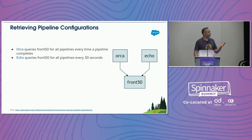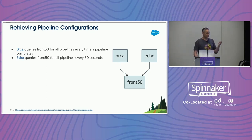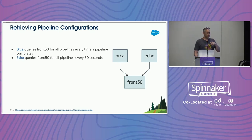Every time a pipeline completes, Orca was querying for all the pipelines. And every 30 seconds, every Echo pod was querying for all the pipelines all the time. We were just sitting here warming the globe, querying for all these pipelines and mostly dropping the results on the floor. There is a feature in Spinnaker where a pipeline completion can trigger another pipeline, so Orca does actually need to know some of this — but not all of it. And Echo only needs to know about the pipelines it's actually going to trigger.